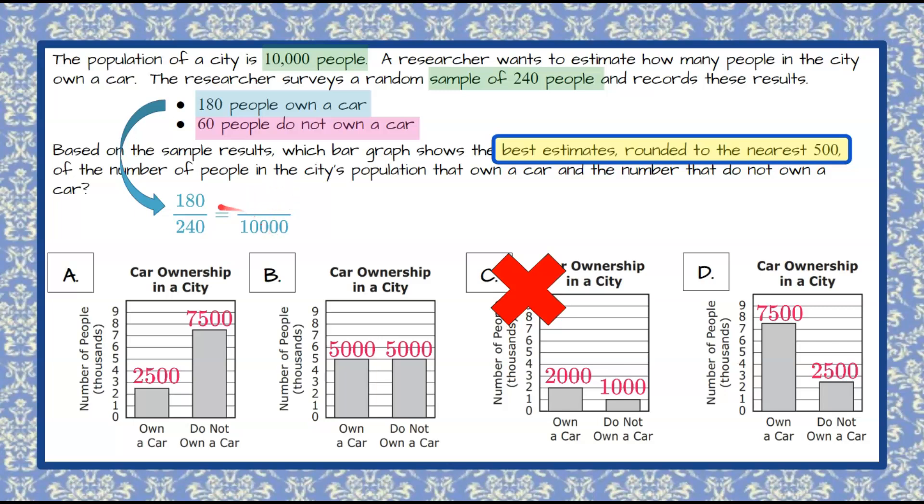So on your calculator 180 times 10,000 divide by 240 will give you 7,500. That's using cross product property. So now we can see that owning a car on the bar graph should be 7,500 people. Over here we can see that we can rule out bar graph A because it represents owning a car is 2,500 that does not match up.